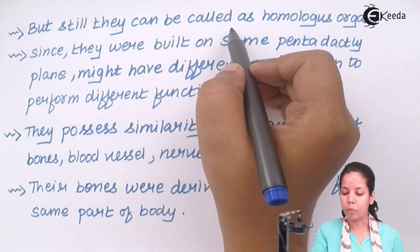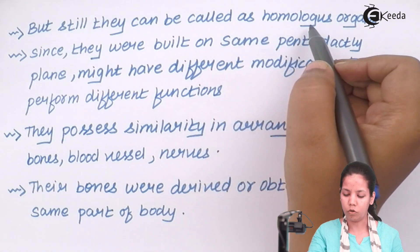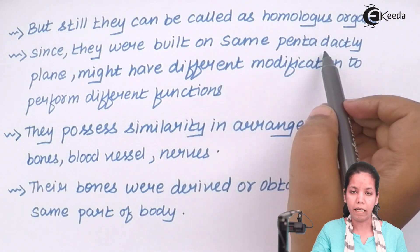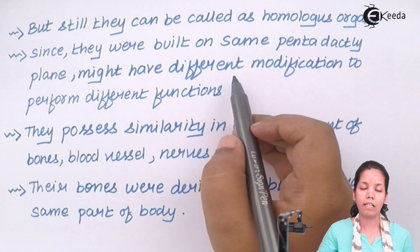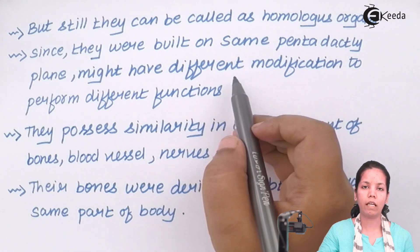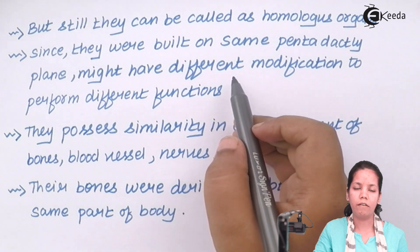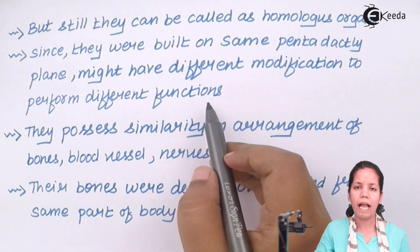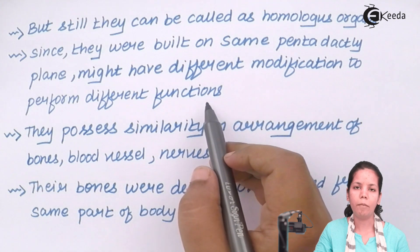But still they could be called homologous organs since they had a common origin. Also, they were built on the same pentadactyl plan. While they have different modifications — for example, in man the forelimbs are modified for running and walking, in birds the forelimbs were modified for flight, and in seals the forelimbs were modified for movement in water — they all performed different functions, yet still had this common origin and were all associated with movement in some form.